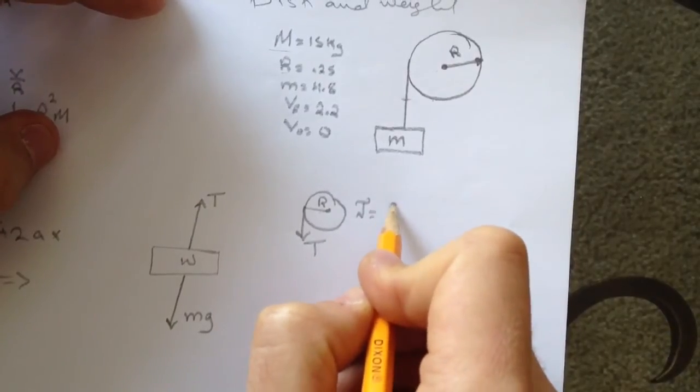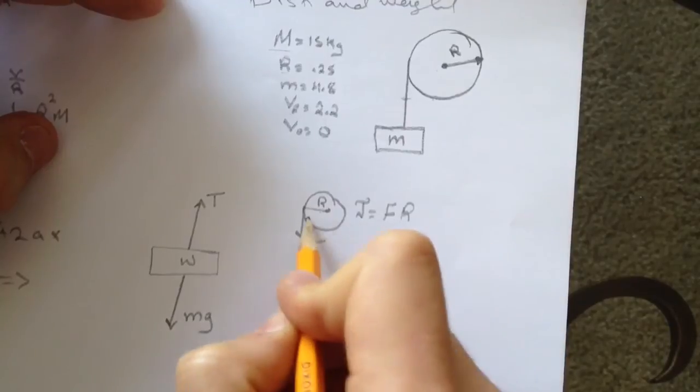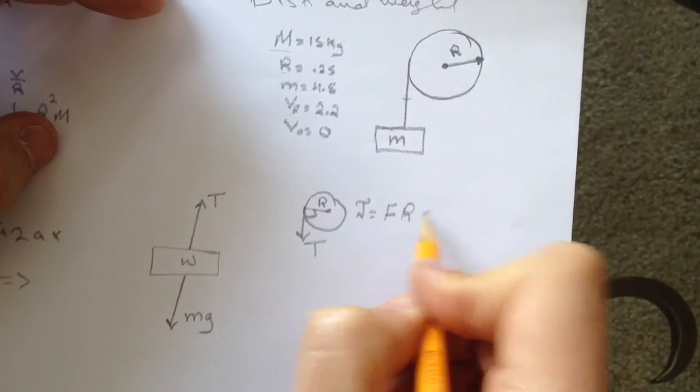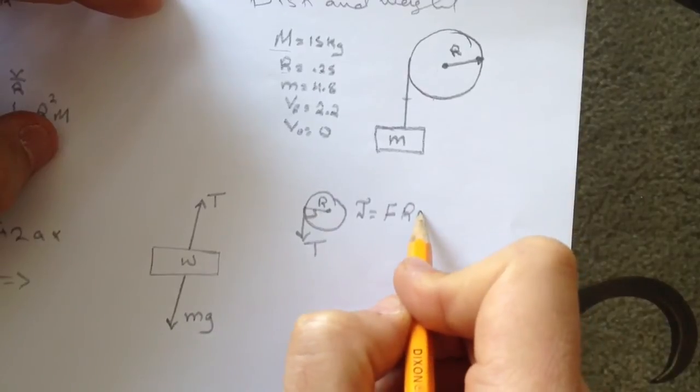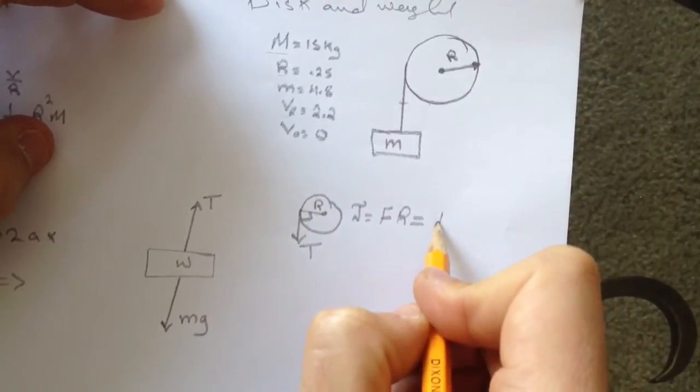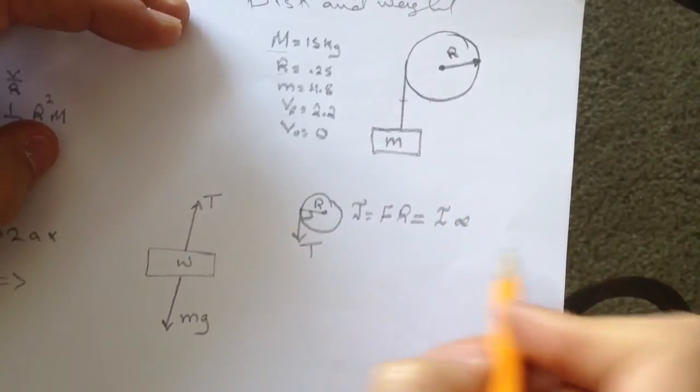The theta here is pi over 2, 90 degrees, which sine of 90 degrees is 1, so we'll just ignore that. Then it equals the inertia times the angular acceleration. You need to memorize this.